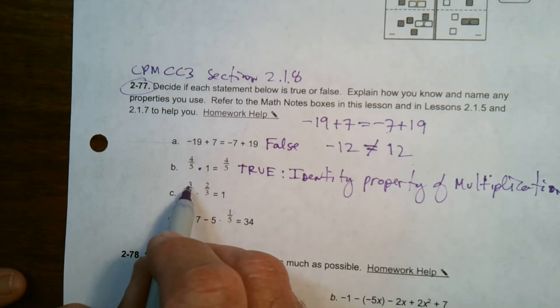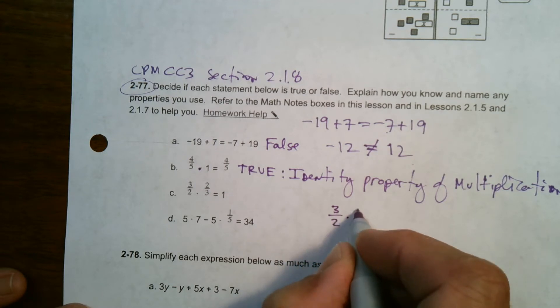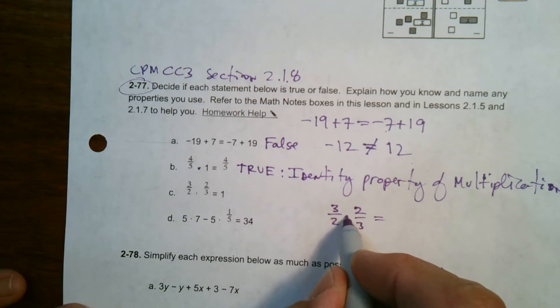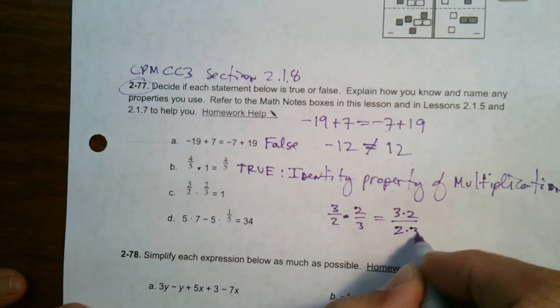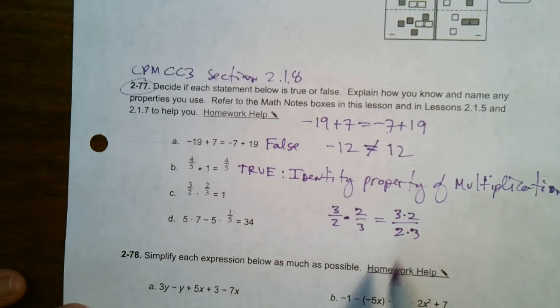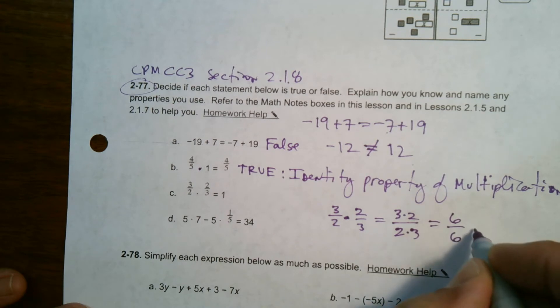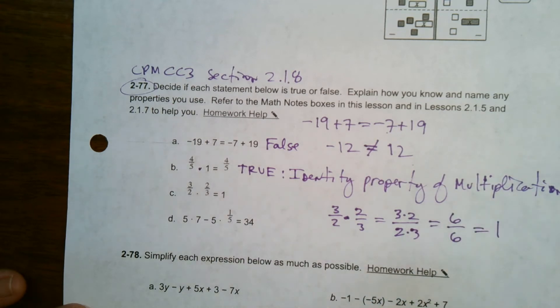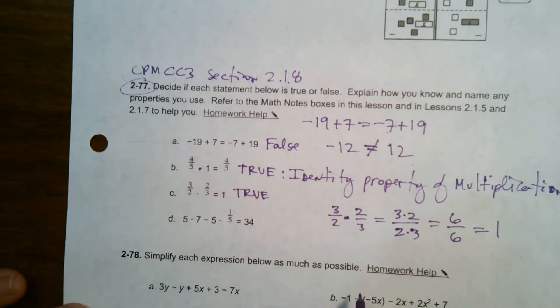And then I look at this one. This is 3 over 2 times 2 over 3 equals 1. Would that be true? Let's check. So 3 over 2 times 2 over 3. Multiplication of fractions is just multiply the numerators and the denominators. So it's 3 times 2 over 2 times 3, which equals 6 over 6, which does equal 1.